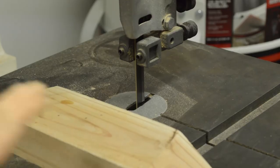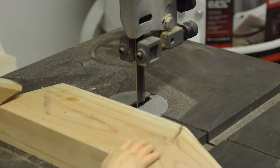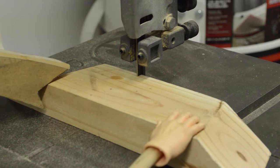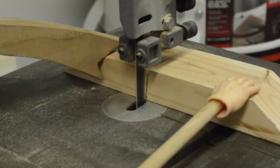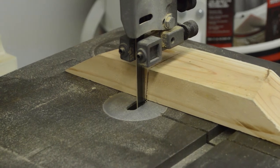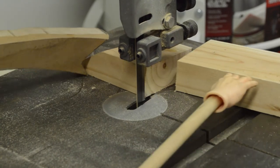Start the bandsaw and guide the material through the blade with a slow and steady pace. You should never have to force the materials through. For more accurately cut parts, direct the blade to the waste material side of your line and try to preserve the line as you cut rather than cutting on the line.